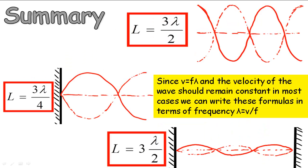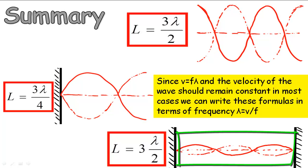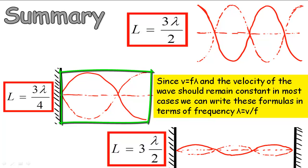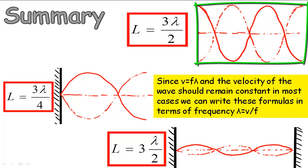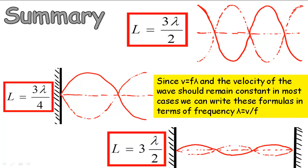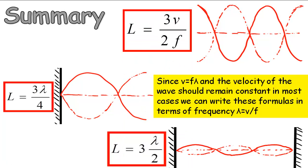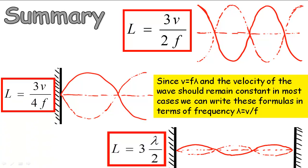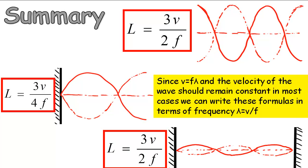So let's have a summary. We've seen the guitar string, which was fixed at either end, so we had to start with a node and end with a node. We've also seen the bullwhip, where we had to start with a node at the hand and end with an antinode at the tip. And we've seen the javelin, which starts with an antinode and ends with an antinode. Because wavelength, or lambda, can be described as the velocity of the wave divided by its frequency, we can substitute this into the equations and give ourselves more scope for solving problems and applying these equations to many more situations.